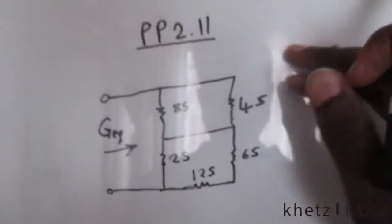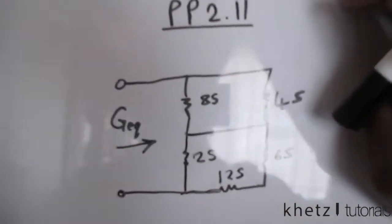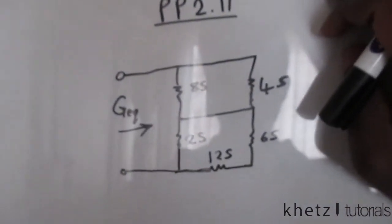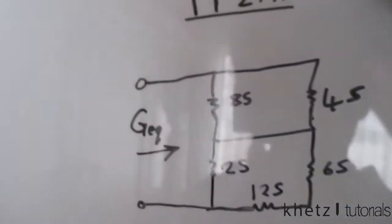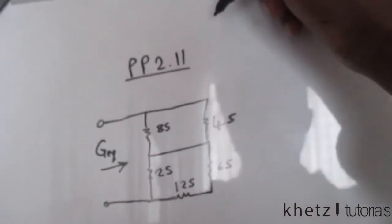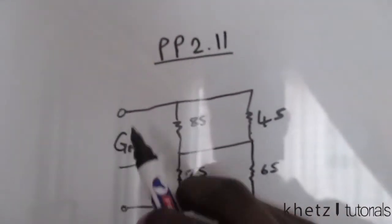Welcome back to CATS Tutorials and in this video we are going to be covering practice problem 2.11. The question asks us to find the equivalent conductance as we look into the circuit from this side or from these terminals.